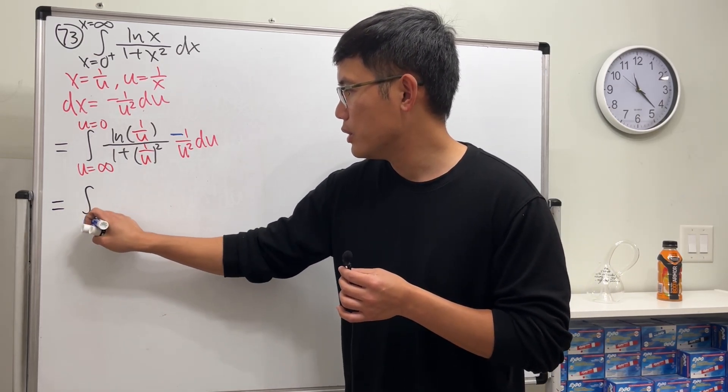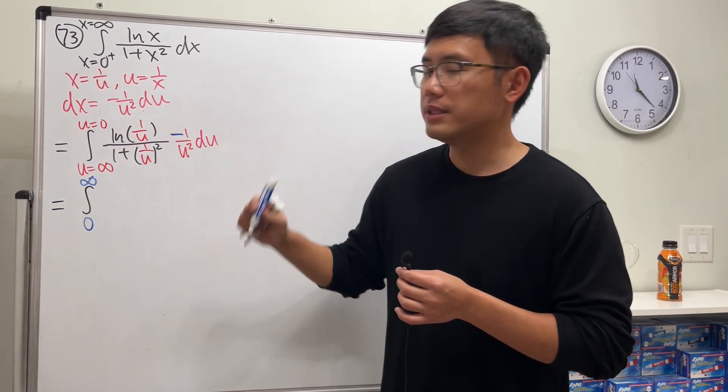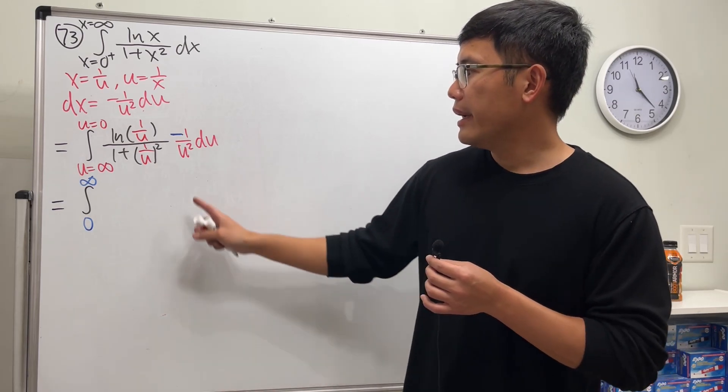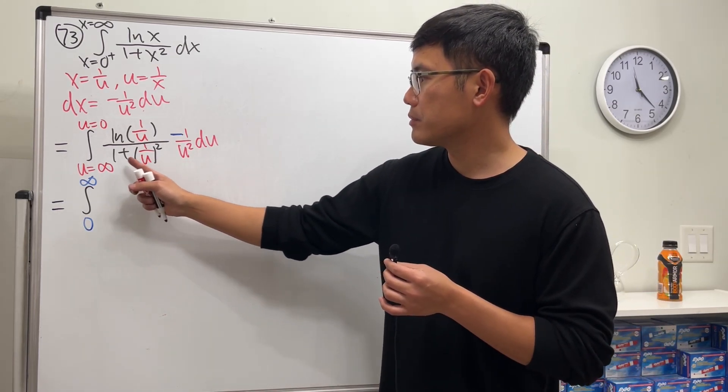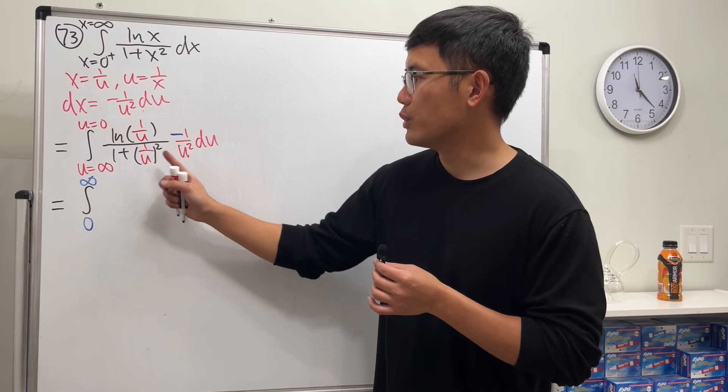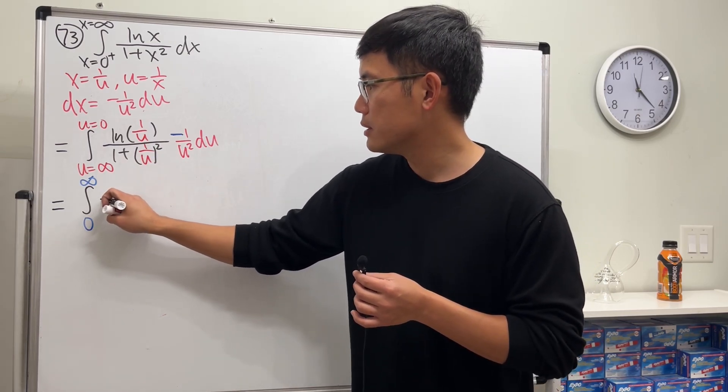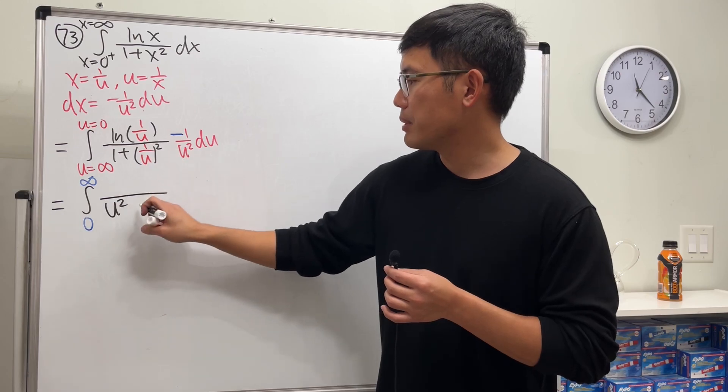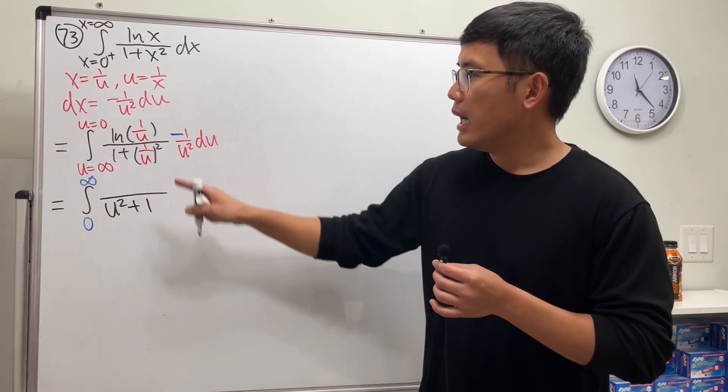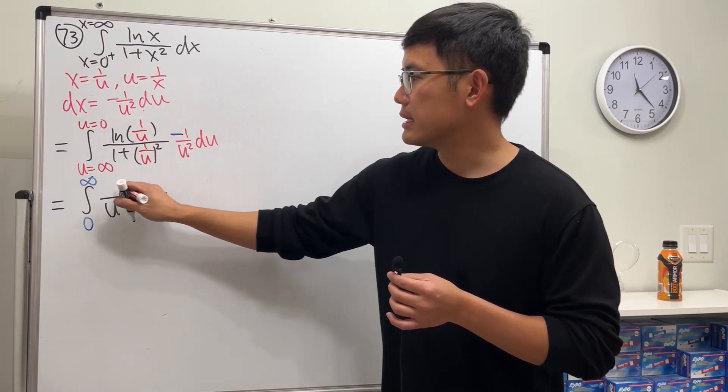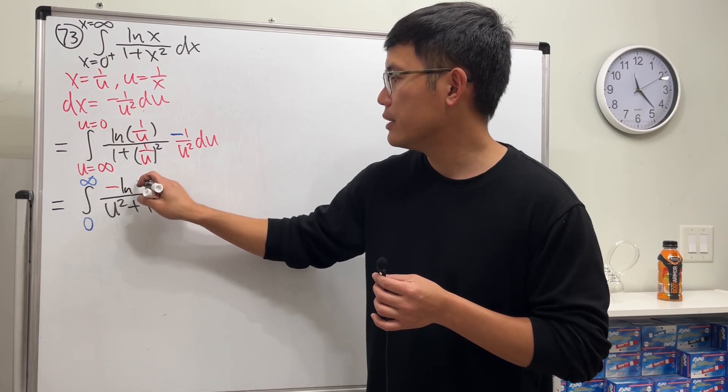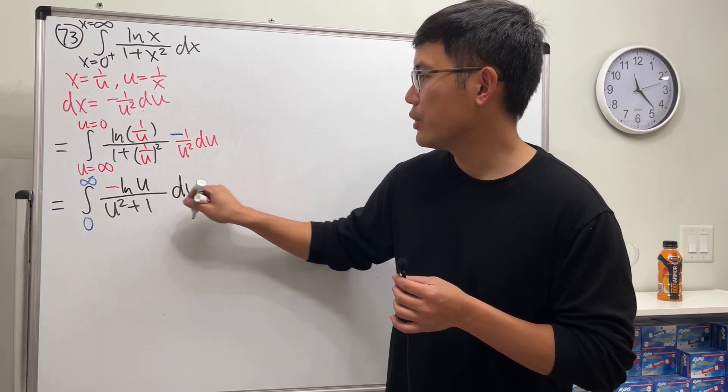And then I will distribute this u square, so we have u square on the bottom and then plus one on the top. I can write this as negative ln u in the u world.